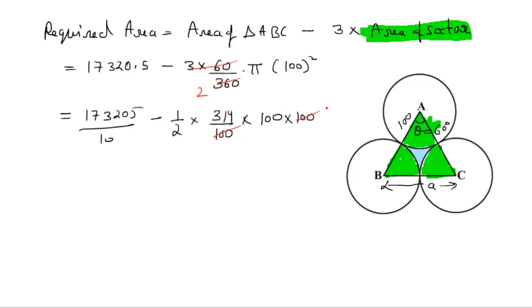Now simplifying, this 2 goes into 10 to give 5. The 5 cancels with 3.14 times 100. We get 17320.5 minus 5 times 3.14 times 100. Further simplifying gives us 17320.5 minus 1570.